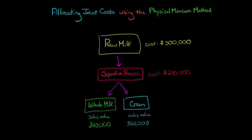Now we need to find a way to allocate these joint costs to the products. One way we can do that is we could say, what's some physical measure that we could use for whole milk and cream? Well, we could measure them in gallons. So let's say that we have 70,000 gallons of whole milk and 30,000 gallons of cream.